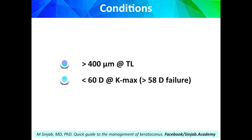There are two conditions to use corneal crosslinking. The first is good corneal thickness, which means above 400 microns at the thinnest location without epithelium in the epi-off technique. And K-max should be less than 60 diopters, because studies have shown that when K-max is above 58 diopters, there was a high rate of failure.